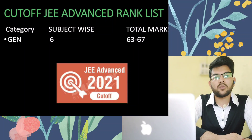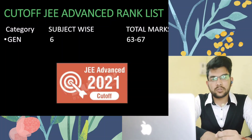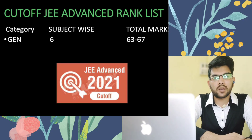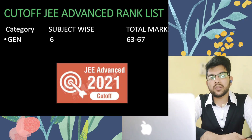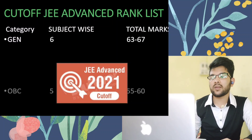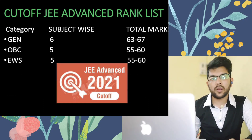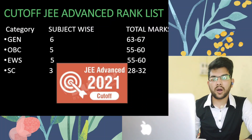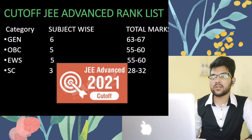Based on total marks of around 360 to 380, here is the cutoff to be included in the JEE Advanced rank list by category. For general candidates: 6 marks subject-wise and 63 to 67 aggregate marks. For OBC candidates: 5 marks subject-wise and 55 to 60 total marks. For EWS candidates: same as OBC. For SC candidates: 3 marks subject-wise and 28 to 32 aggregate marks. For ST candidates: similar marks required as SC candidates.